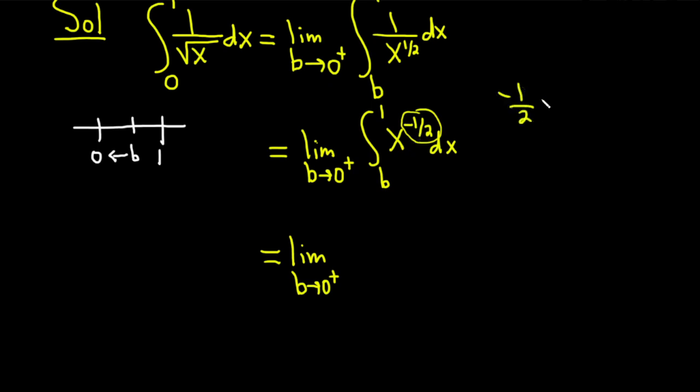The negative 1 half plus 1 is simply 1 half. You can think of 1 as two halves if you like. So it will be x to the 1 half. And then we divide by 1 half. But when you divide by 1 half, you really multiply by 2. So this is 2. And I'll put a bracket here. And we're going from b to 1.